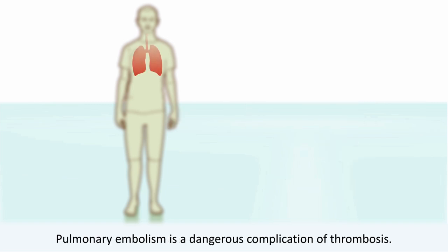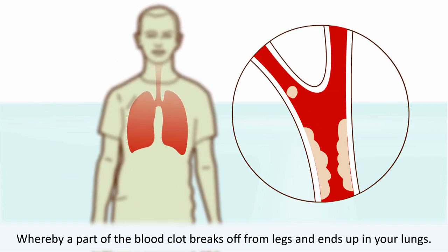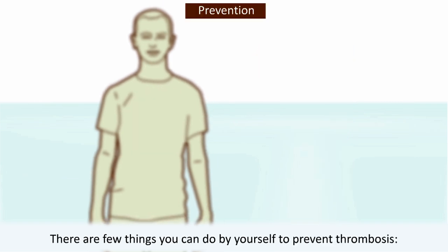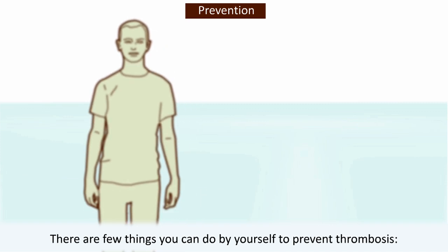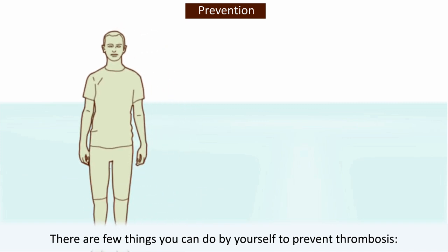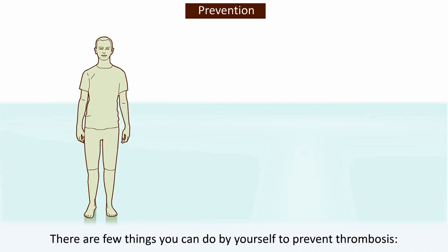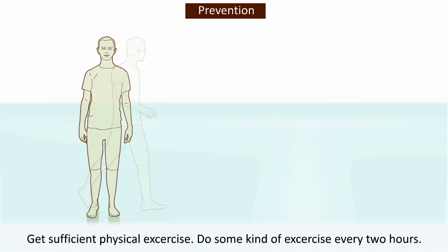Pulmonary embolism is a dangerous complication of thrombosis, whereby a part of the blood clot breaks off from the legs and ends up in your lungs. There are a few things you can do by yourself to prevent thrombosis: get sufficient physical exercise.